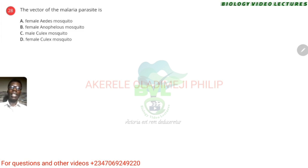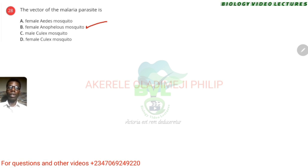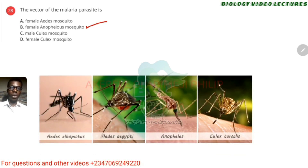The vector of the malaria parasite — it's going to be the female Anopheles. It is only the female that gets pregnant with eggs and needs to suck blood to incubate those eggs. So the answer is B — female Anopheles mosquito. This is your Anopheles, but not just all the Anopheles — the female one.